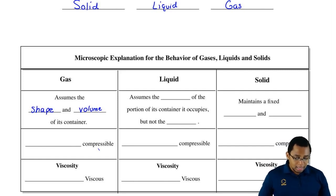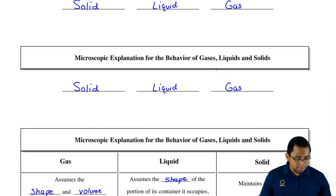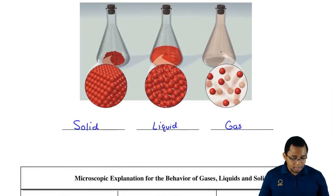For the liquid, we're going to say it assumes the shape of the portion of its container it occupies. In the middle container, we can see that the liquid becomes a cylinder just like the container it's in. It takes on the same shape of it.